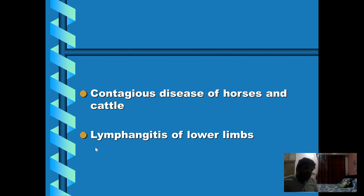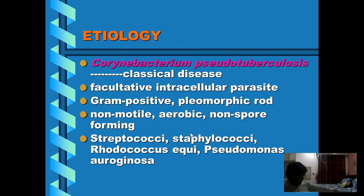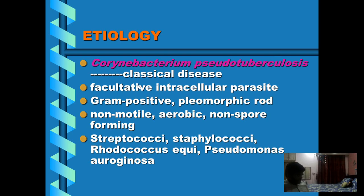The disease involves inflammation of the lymphatics of the lower limb, both in horses and in cattle. Corynebacterium pseudotuberculosis is a soil-borne organism that gains access to tissue through wounds and through insect bites. It possesses a cytotoxic surface lipid coat that appears to facilitate intracellular survival of this pathogen and abscess formation.